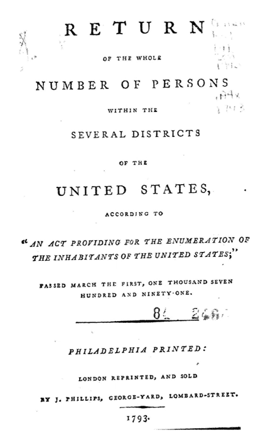Census data included the name of the head of the family and categorized inhabitants as follows: free white males at least 16 years of age to assess the country's industrial and military potential; free white males under 16 years of age; free white females; all other free persons reported by sex and color; and slaves.